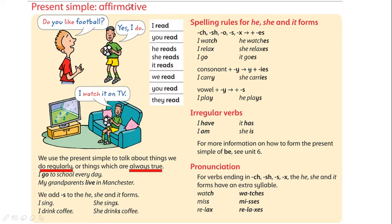The first form we will look at is the affirmative — that means positive. For example: I read, you read, we read, you read, they read. However, when we have the subject like he, she, or it, we have to put S or ES after the verb. So we have: he reads, she reads, it reads.